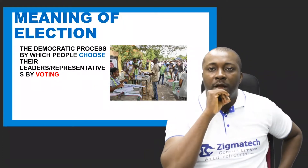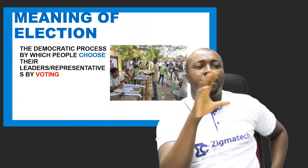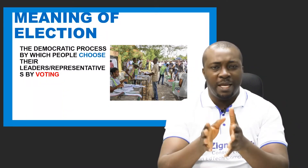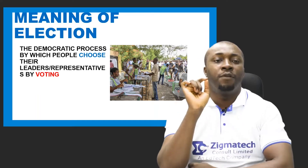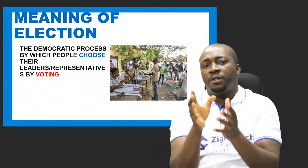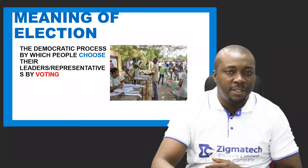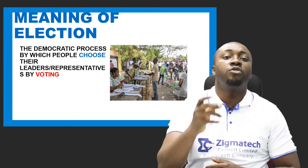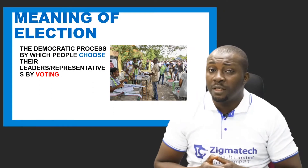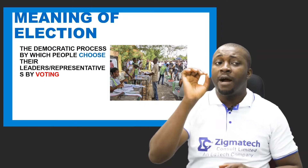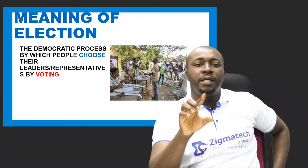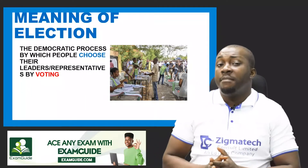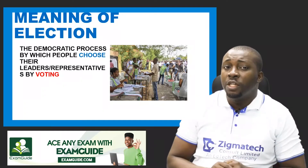Now let's look at the meaning of election. Election is simply defined as a democratic process by which people choose their leaders or representatives by voting. It is a process that takes place within a democratic setting because it is obtainable only in democracy. What people do here is choose their leaders, representatives, and at times make decisions. What makes this choosing different from others is that it is done by voting, which makes election different from other forms of choosing.